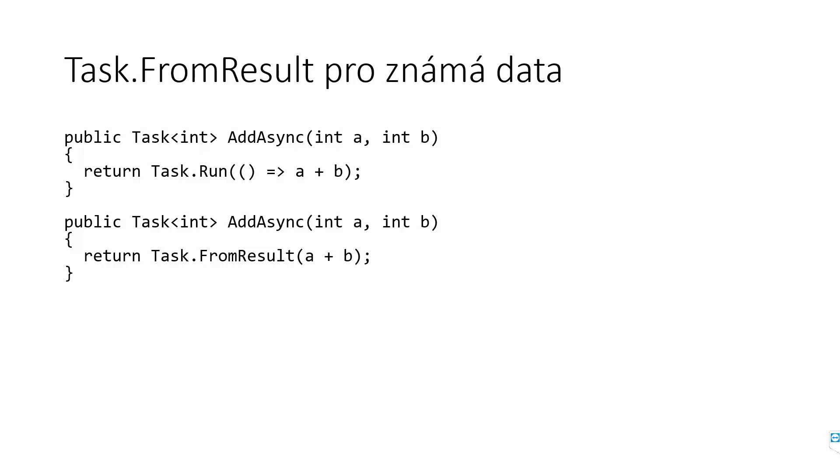Another performance consideration: if you have a simple operation or a result from cache, don't use Task.Run — use Task.FromResult. Task.FromResult doesn't spin up a new task or start computation; it returns a task already in the completed state, so you get the result immediately. It's way faster, way easier, and scales much better.